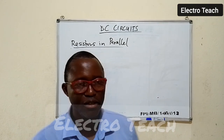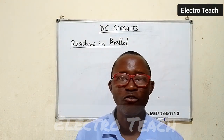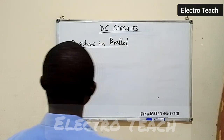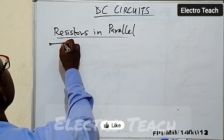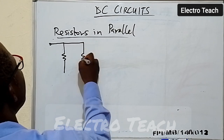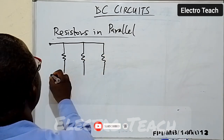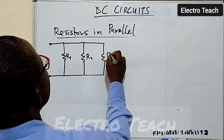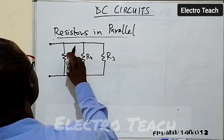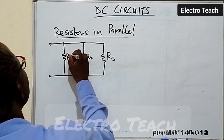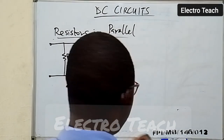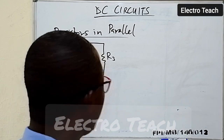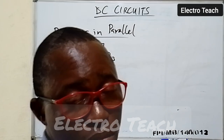We want to learn how to determine the equivalent resistance of parallel branches and the equivalent current flowing in such a circuit. When we have resistors in parallel, we can have something like this — resistors R1, R2, R3. We can have more than three; we can have four, five, as many as possible. To determine the equivalent resistance of resistances connected in parallel, we use this formula.